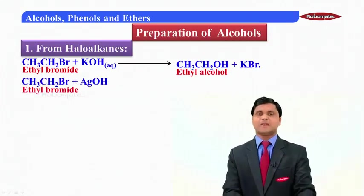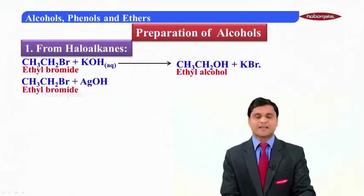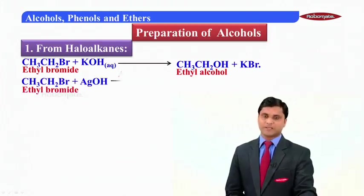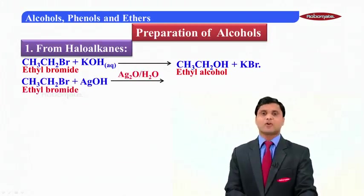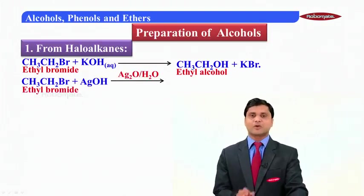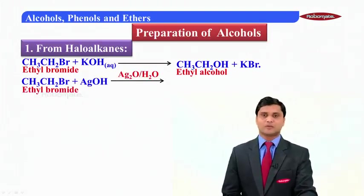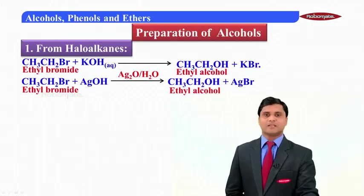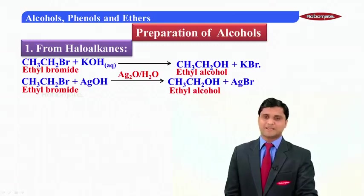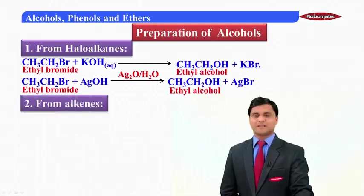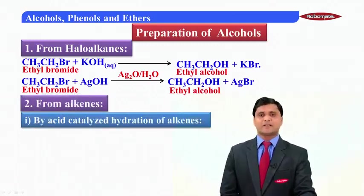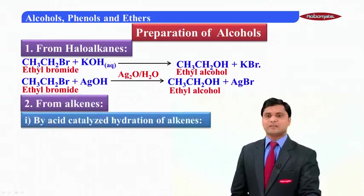Similarly, when ethyl bromide reacts with silver hydroxide — silver hydroxide is produced by dissolving silver oxide in water — we get ethyl alcohol and the side product is silver bromide. The second method is preparation from alkenes.